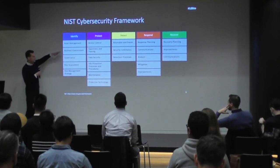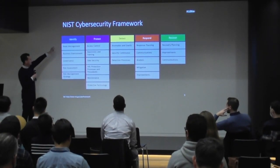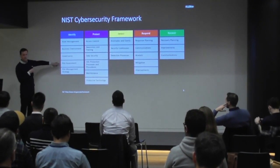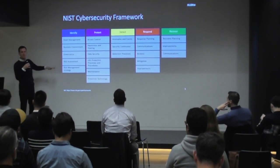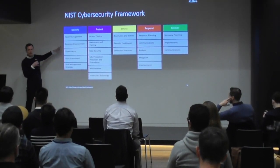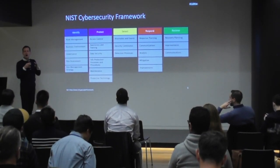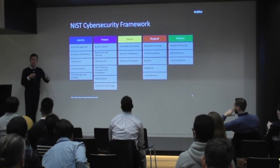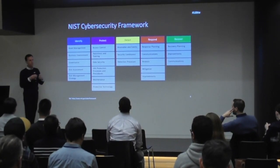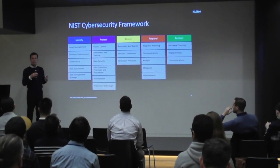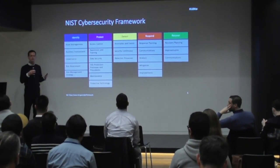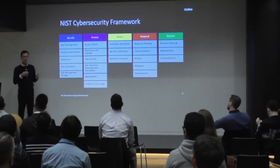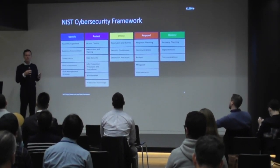Going a little more into detail — for identify, that's where your governance structure is included, you have your risk assessment. Once you know your assets, you identify how risky your operation is and how you handle them, and you come up with an assessment. You try to put a price tag on it — if I lose that data, how much does it cost me? And you assign a likelihood. That's the basic idea behind it, and then you take a decision.